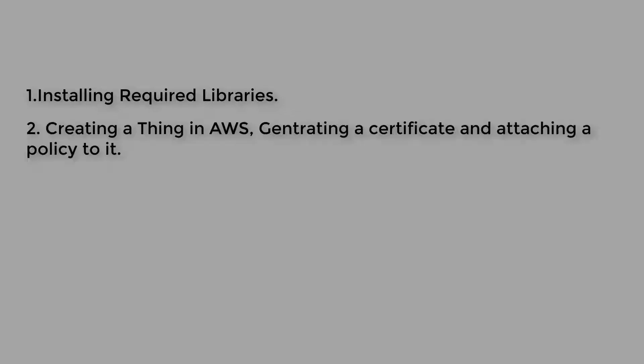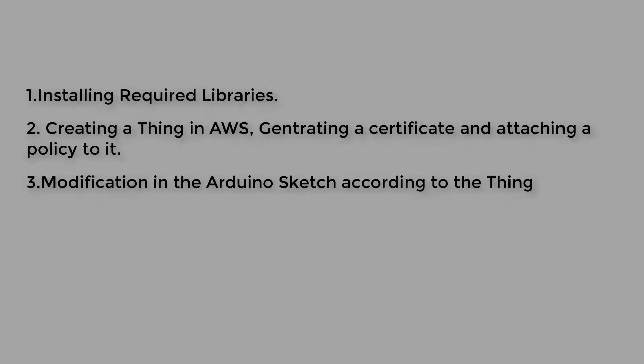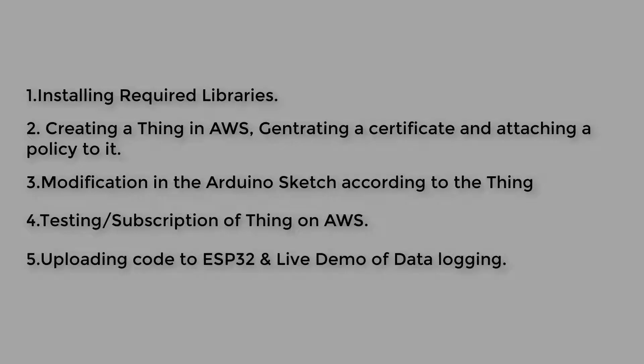In total, this process includes five steps. One is installing required libraries. Two is creating a thing in AWS. Three is generating a certificate and attaching a policy to it. Four is modification in the Arduino sketch according to the thing. And five is uploading code to the ESP32 and a live demo of data logging.